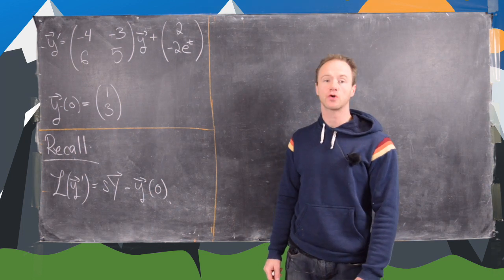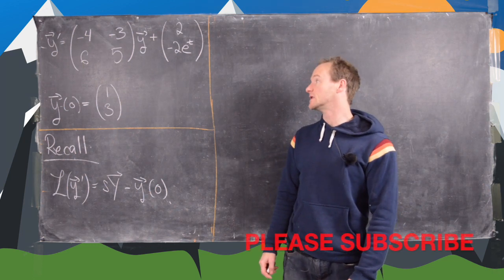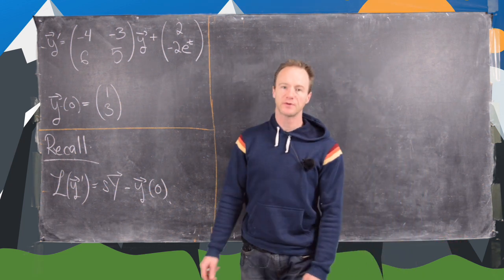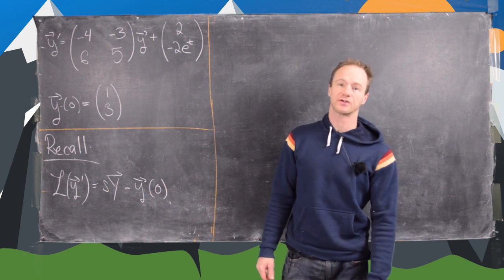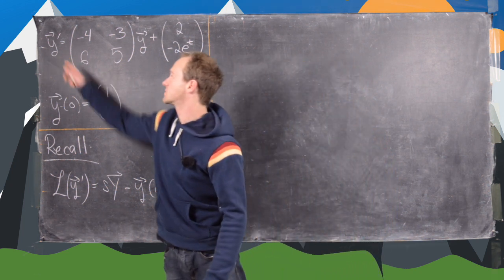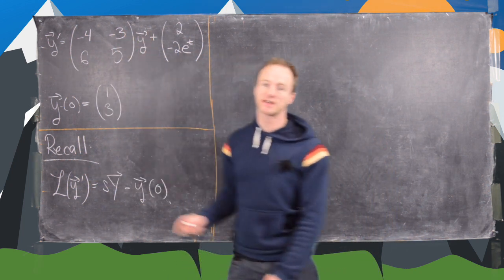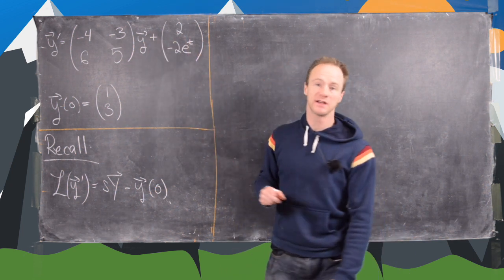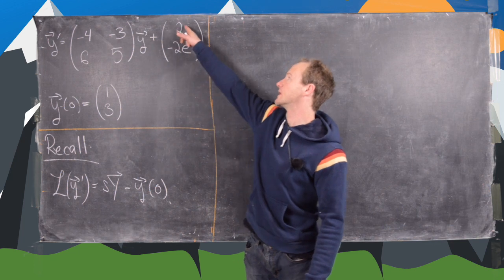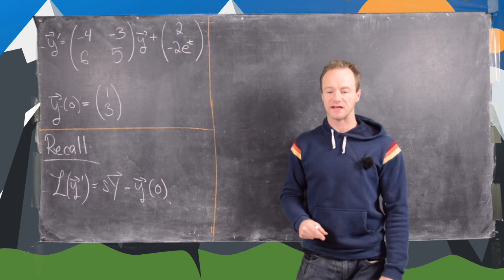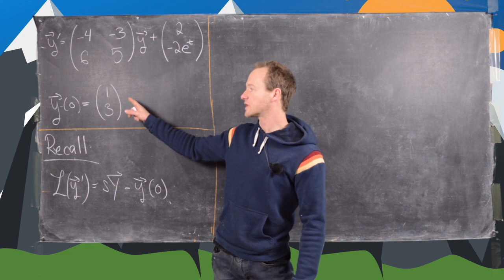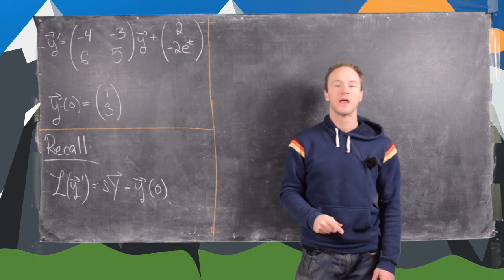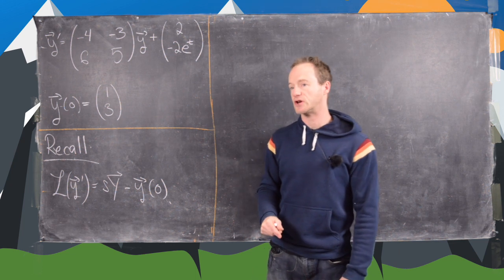In this video we're going to solve our first order non-homogeneous linear differential equation with constant coefficients, represented by the following vector equation. We have vector y prime equals the matrix [-4, -3; 6, 5] times vector y plus the vector valued function [2, -2e^t]. We're given an initial condition that y evaluated at 0 is the vector [1, 3], and we're going to solve this using the Laplace transform.